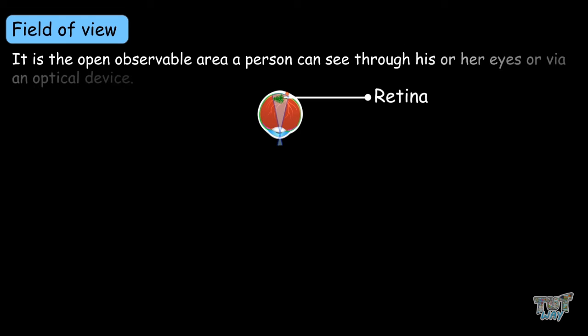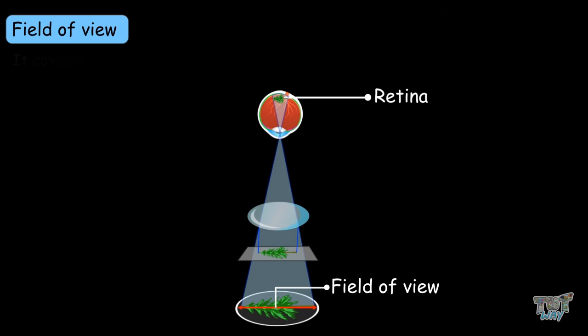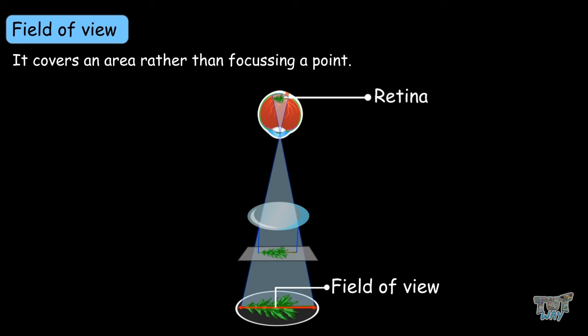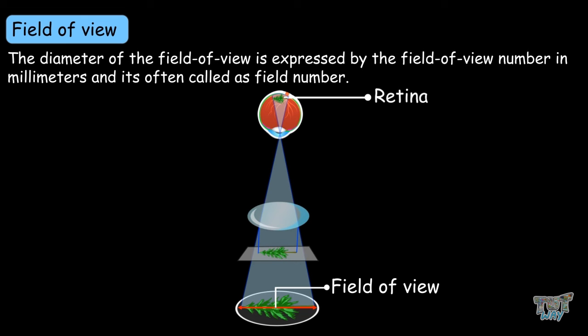Now let's learn about the field of view. It is the open observable area a person can see through their eyes or via an optical device. It covers an area rather than focusing on a point. The diameter of the field of view is expressed by the field of view number, which is in millimeters, and it's often called the field number.